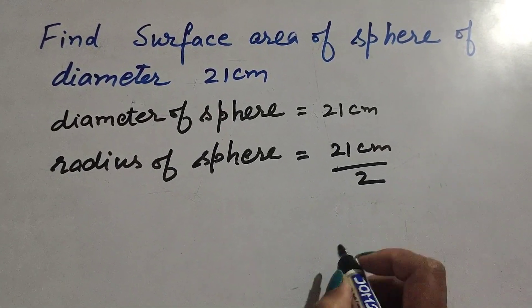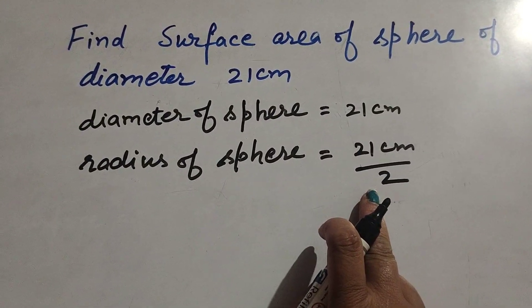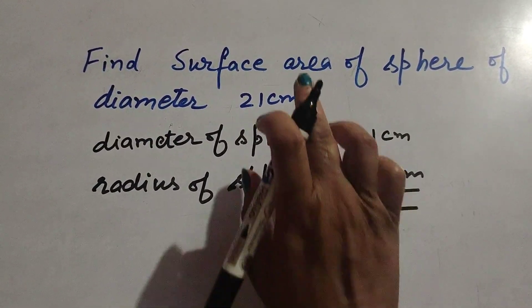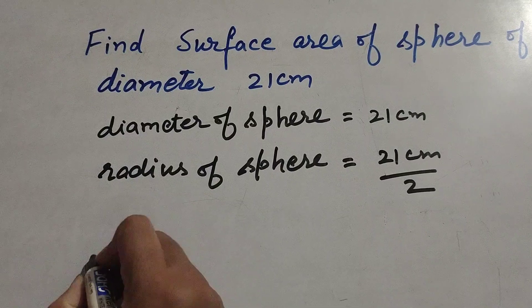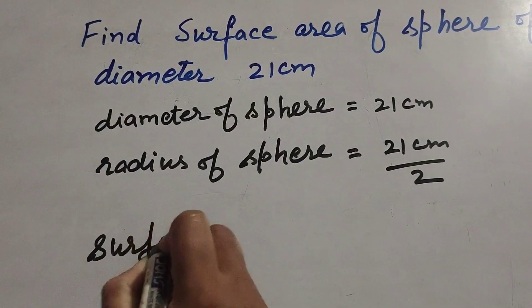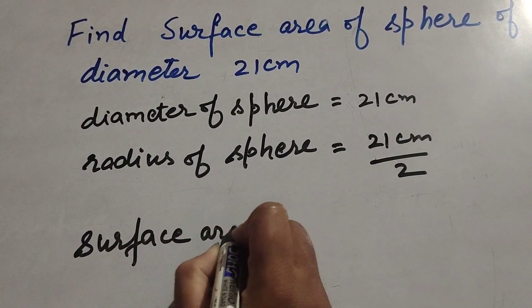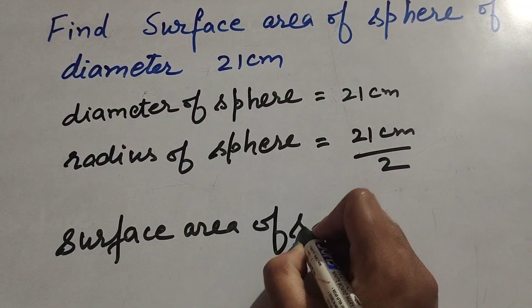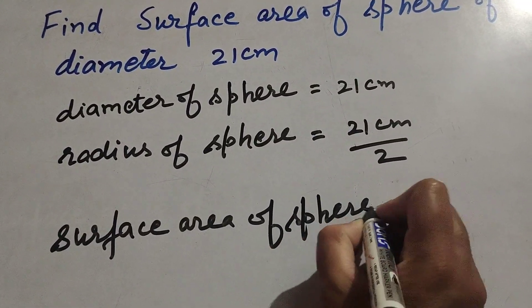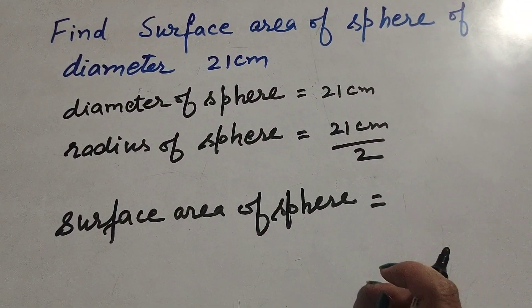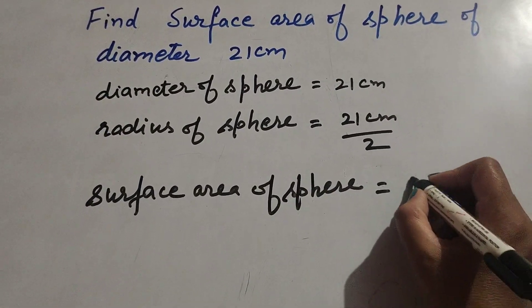This is 21 centimeters over 2, which is the radius of the sphere. Now we find the surface area of the sphere. We know the formula to find surface area of sphere: it equals 4πr².